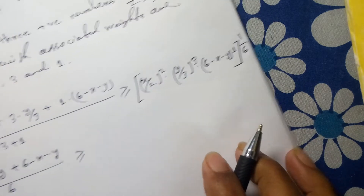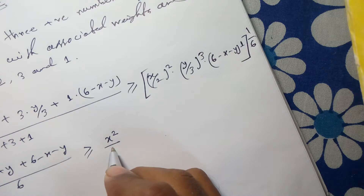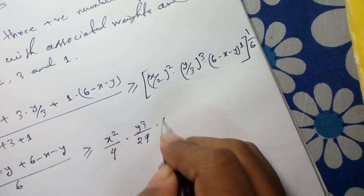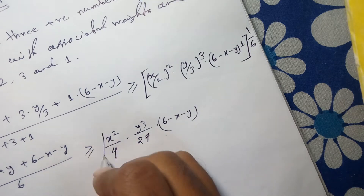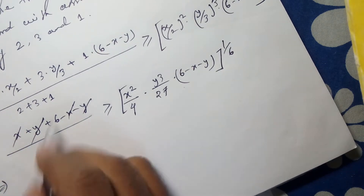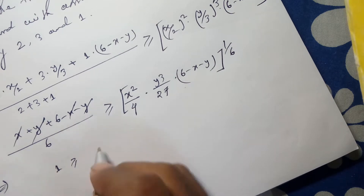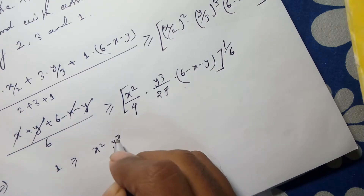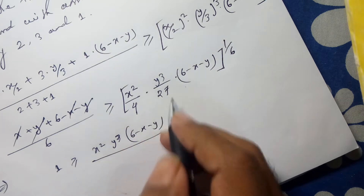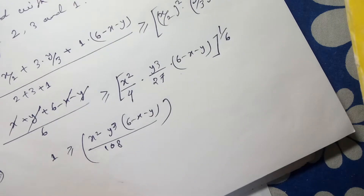This simplifies to 6 divided by 6, which equals 1. The GM side gives (x/2)^2 times (y/3)^3 times (6 minus x minus y)^1, all to the power 1/6. This means (x²/4) times (y³/27) times (6 minus x minus y), to the power 1/6, is less than or equal to 1. Raising both sides to the power 6, we can write 1 is greater than or equal to x² y³ (6 minus x minus y) divided by 108.